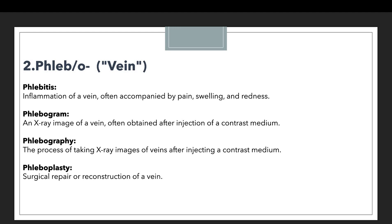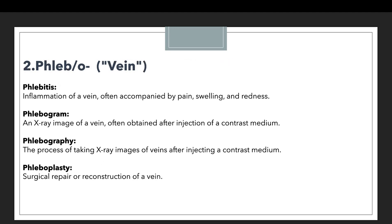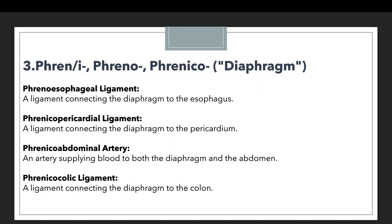So far we have discussed two prefixes with their respective examples. The first was pharynge, related to pharynx or throat. The second was phleb or phlebo, related to vein. In the same manner, we will discuss another prefix — phren, phreni, phreno, or phrenico — which are alternative forms of the prefix related to the diaphragm.